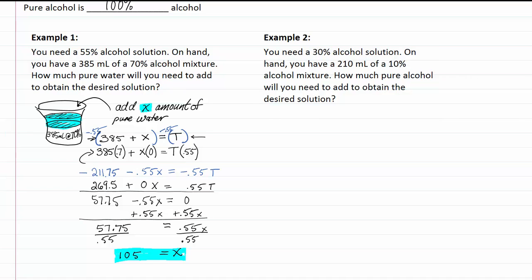Again, we're going to draw a picture. And you're going to start out with an amount. It says that you have 210 milliliters at 10% alcohol. It also says that you're going to add pure alcohol to this mixture. So that's at 100% and we're going to add x of it.